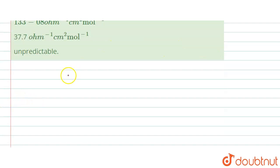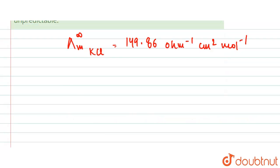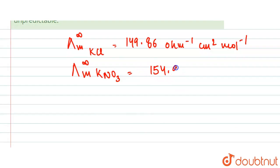So we are given that for KCl it's 149.86 per ohm centimeter square per mole, and for KNO₃ we are given the value 154.96 per ohm centimeter square per mole. The next value we are given is for chlorine, and this is equal to 71.44 per ohm centimeter square per mole.